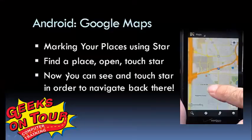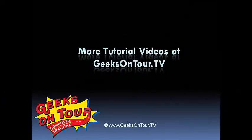And that's the technique that I use to mark places that I want to be able to navigate to easily using Google Maps on Android. You mark your places using the star, and then you touch the star when you want to navigate back there. There's lots more to learn at GeeksOnTour.tv for tutorial videos.